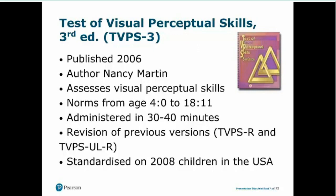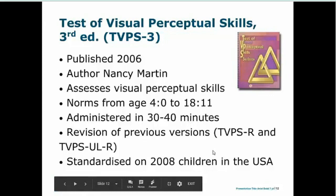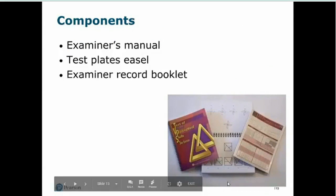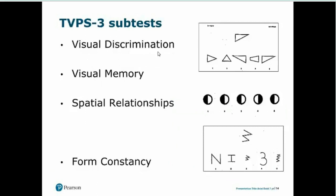The TVPS3 is a revision of the TVPSR, which most people are familiar with. Standardisation was done in the USA on 2,008 children — quite a good sample for the age range. Components include the manual, the examiner record form, and the test plates on an easel. There's no examinee response form since there are no drawing tasks.